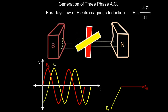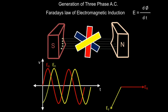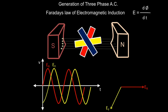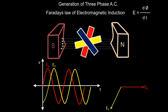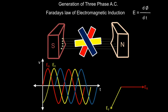Now we take one more conductor and mark it blue. We keep the blue conductor 120 degrees apart from the yellow conductor. The angle between the red conductor and the blue conductor will therefore be 120 + 120 = 240 degrees. Again we rotate this blue conductor, and the rate of change of flux with respect to time will produce an induced EMF in the blue conductor as well.